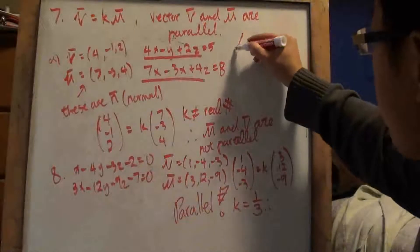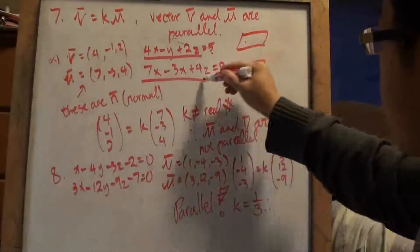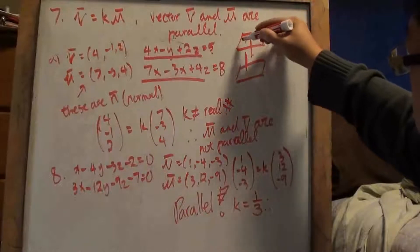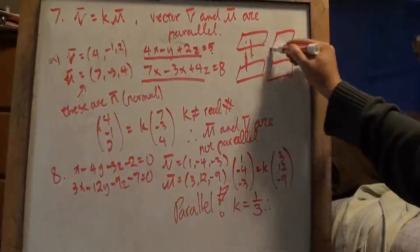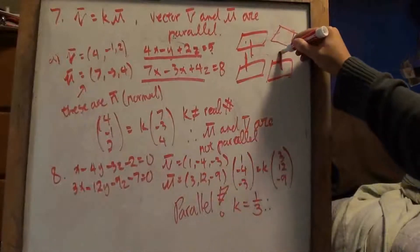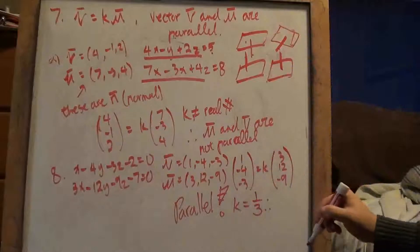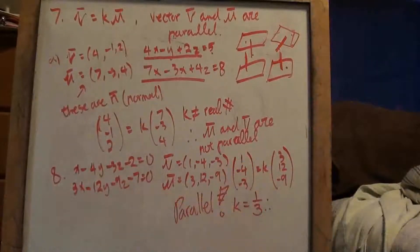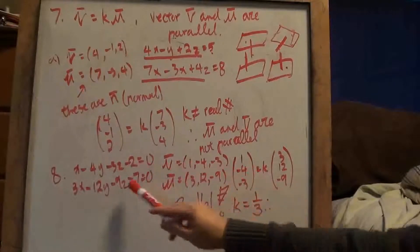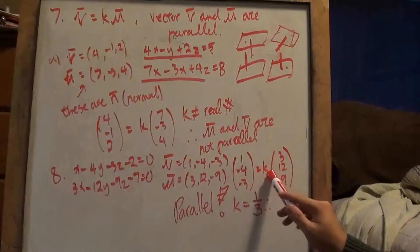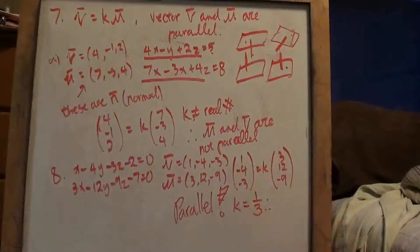If you have two planes and their normal vectors are parallel, then the planes are parallel. But if the planes aren't parallel, the normal vectors won't be parallel either. For question 8, in this case it is parallel. Just salvage the coefficients of each variable to make vector components, then see if there's a valid k — and we do find one: one-half and one-third. So this one's parallel.